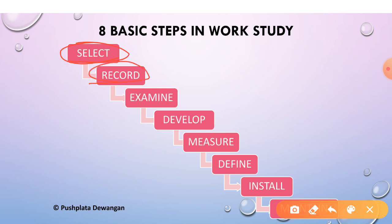The second step is record — record by direct observation everything that happens so that the data is available in the most convenient form for analysis. The third step is examine — examine the recorded facts critically and challenge everything that is done, considering the purpose of the activity, the place where it is done, the sequence in which it is done, the person doing it, and the means by which it is done.